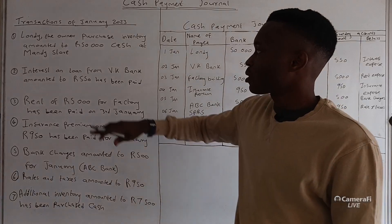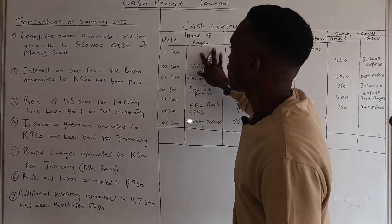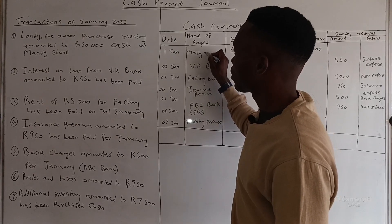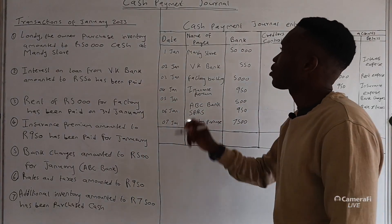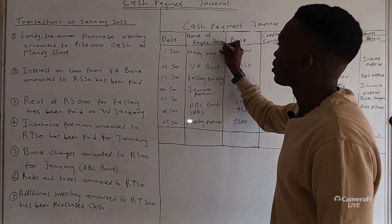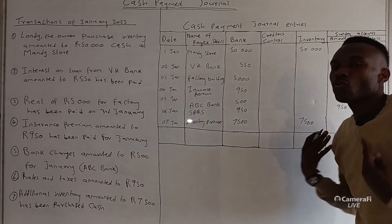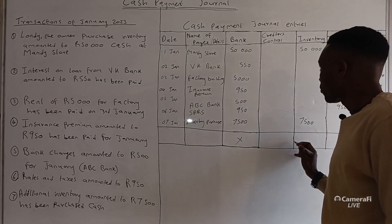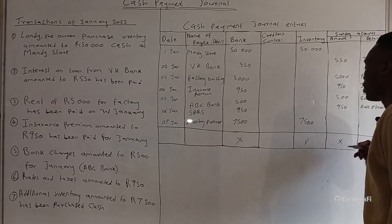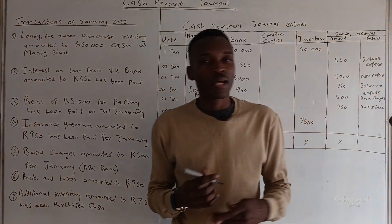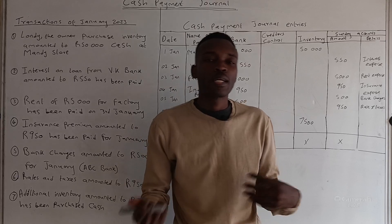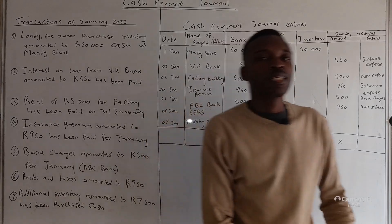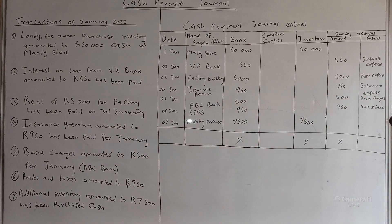Going back to transaction one, for the name of payee we should write Mandi Store since that is where the inventory was purchased — Mandi is the owner doing the transactions, so instead of name of payee you can write the details. After completing all transactions, make sure you total every column and add everything up, then you will be done with your cash payment journal. Please also watch the other video on the combination of cash receipts and cash payment journals. Thank you for watching — please like, subscribe, and share with friends doing accounting.